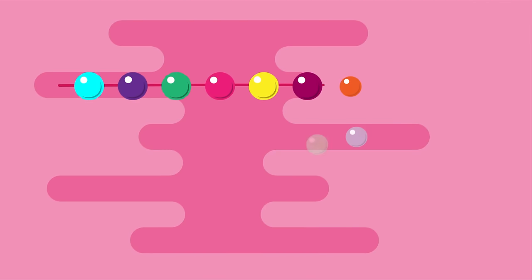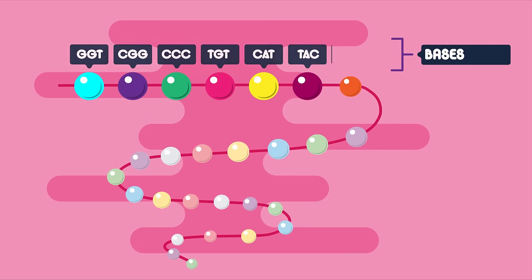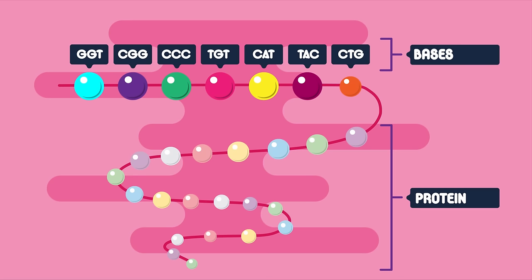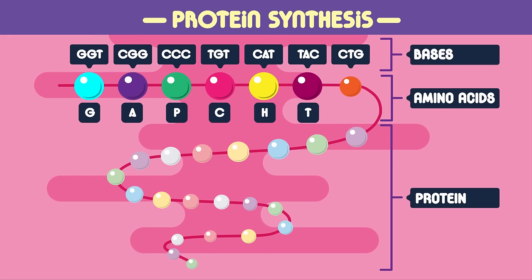Proteins are made of a long chain of amino acids, which has been coded for by DNA. The order of the bases of DNA determines which protein is made by coding for a specific order of amino acids. This is protein synthesis and in this video we're going to look at how it works.